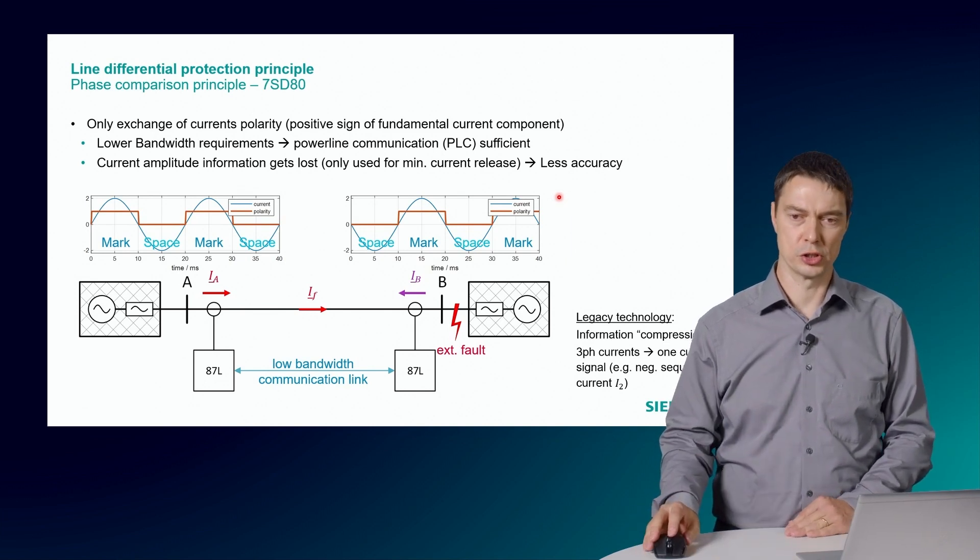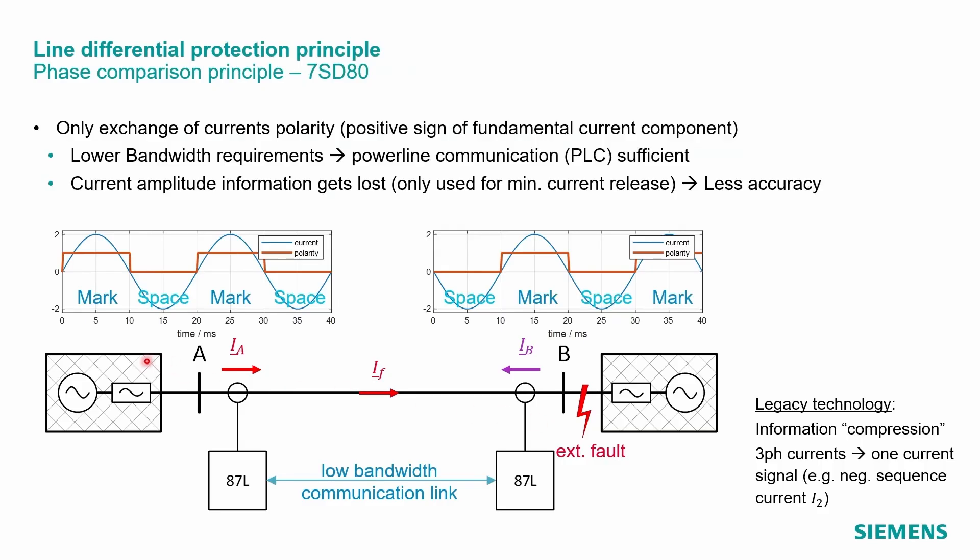In this example here, we consider an external fault condition. If the measured current is positive, we transmit a signal to the remote end, which is here called mark. Otherwise, no information is sent, space. This is done at both terminals.